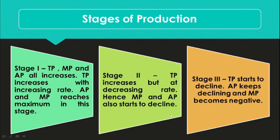To put it simply, the three stages of production in the short run are: stage 1, called the stage of increasing return; stage 2, called the stage of decreasing return; and stage 3, called the stage of negative return. I have already explained all of these things in the previous slides.